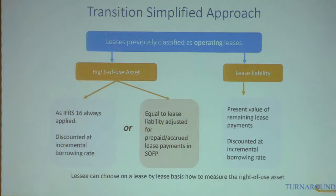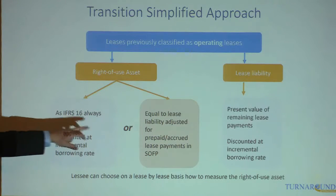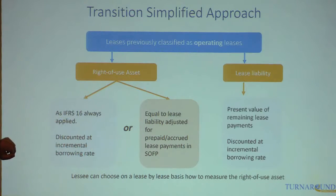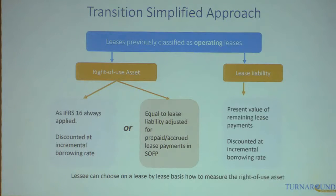Work gets more messy if it's an operating lease. If it's an operating lease, you have two choices. You could book the asset as if you'd always applied IFRS 16 and make the liability equal to it. Or you could book the liability based on the present value of the remaining lease payments.